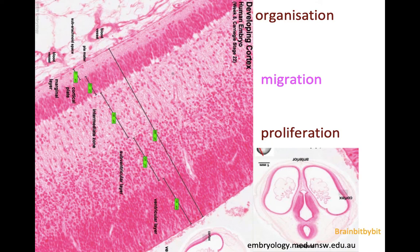There's not much blood vessels in the developing brain, so the neuron gets its nutrients from the radial glial cell, and the radial glial cell coordinates the migration of these neurons.